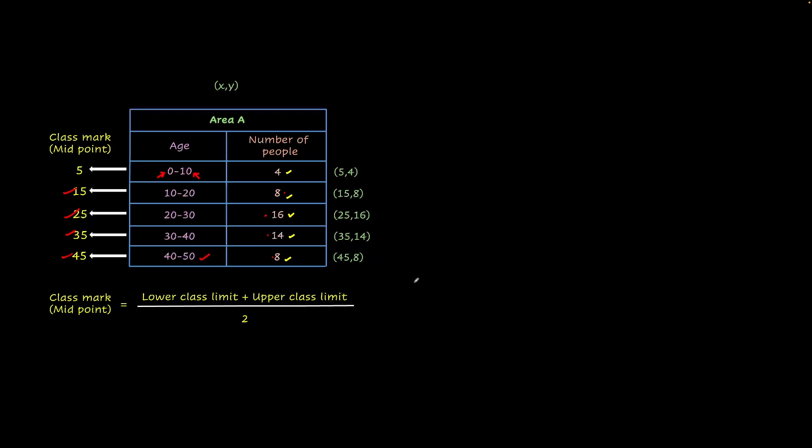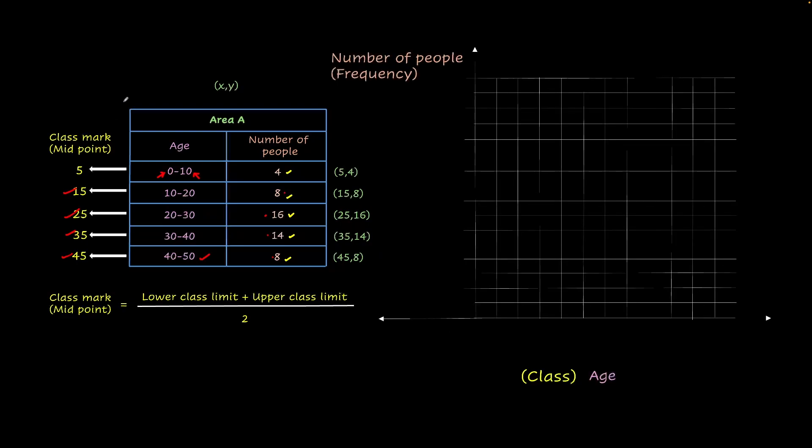Now let's start plotting. So as I said, the x-axis will always be the class or the interval, in this case which is the age, and the y-axis will always have the frequency. In this case, it is the number of people. Let's start plotting. And this is our origin. And our intervals are going to be 10, 20, 30, 40, 50, because we have those as the intervals here. And here we have chosen all even numbers because fortunately they're in even numbers. Now let's start plotting. So first point is 5, 4. So 5, 4, this is where our first point would be. Let's plot that. And the next point is 15, 8. It's going to be over here.